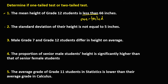For number two, we have 'not equal,' so no direction — this one is a two-tailed test. Then for number three, we have 'differ,' so this one is also a two-tailed test.